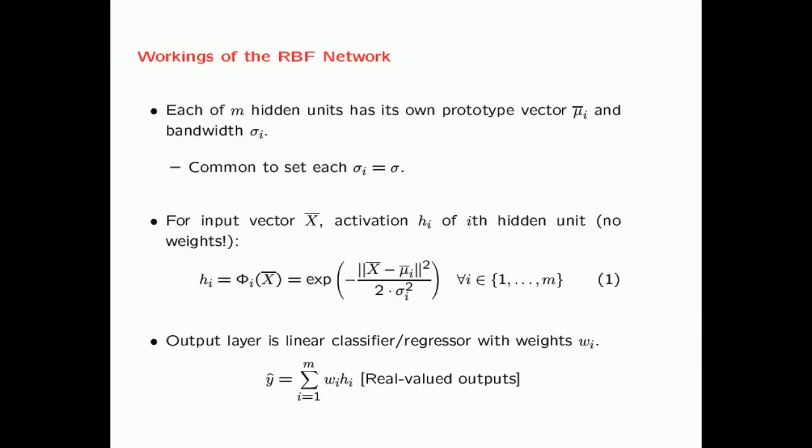So let's look at the workings of the RBF network. Each of the M units has its own prototype vector mu_i and its own bandwidth sigma_i. It's very common to set each bandwidth to the same value sigma, though it is possible to have different bandwidths for different units.